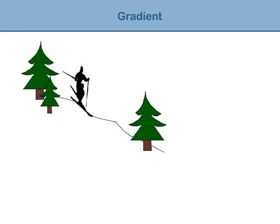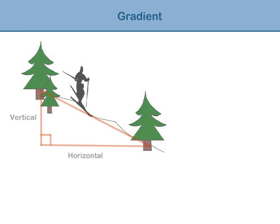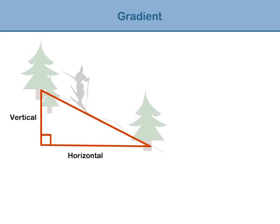To calculate gradient, we begin by drawing a right-angled triangle with the slope as the hypotenuse. The gradient is found by dividing the vertical height by the horizontal distance. We use the formula: gradient equals vertical over horizontal.